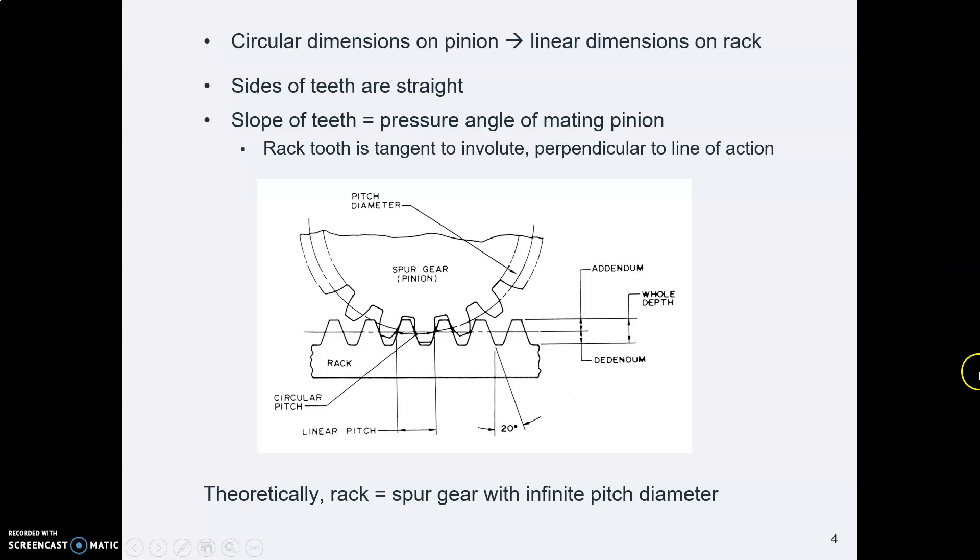And mathematically that's because theoretically this rack is, if you want to think about it abstractly, this rack is still a circular gear, but it has a pitch diameter that's infinity big. And when you have a diameter that is infinity, you get a flat straight line.